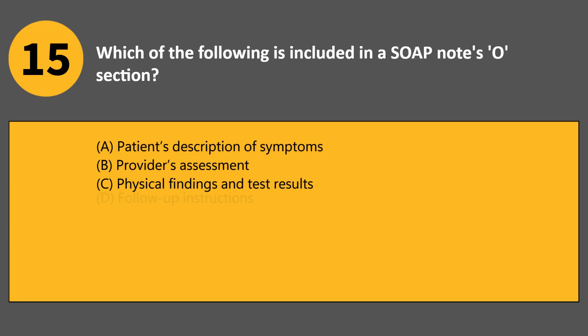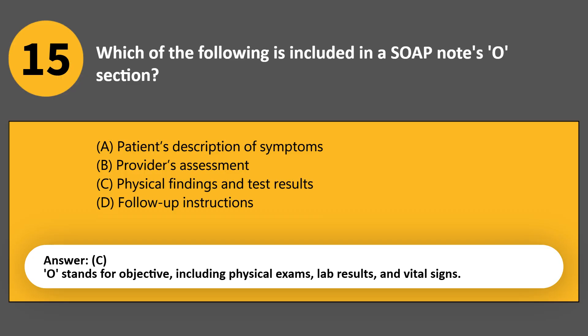Which of the following is included in a SOAP Note's O section? A. Patient's description of symptoms. B. Provider's assessment. C. Physical findings and test results. D. Follow-up instructions. Answer C. O stands for objective, including physical exams, lab results, and vital signs.